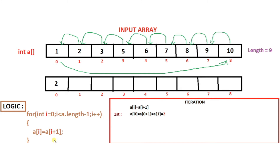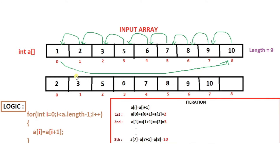Let's understand what this means by looking at the first iteration. During the first iteration, i will be zero, so a[0] equals a[0 + 1], which is a[1]. Since a[1] is 2, this means the element at index one will be placed at index zero — so a[0] becomes 2. In a similar manner, during each iteration the element at the succeeding position will be shifted to the current position.